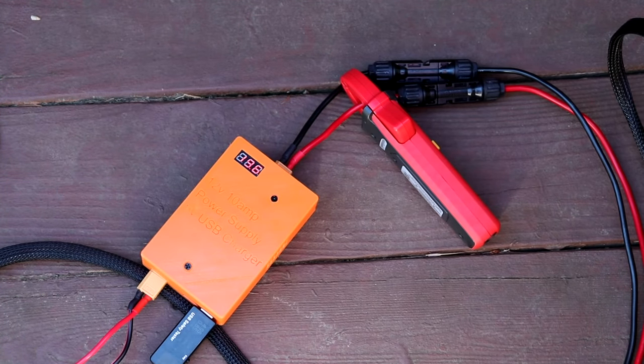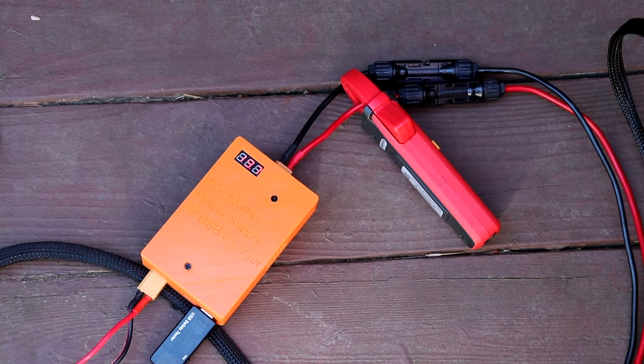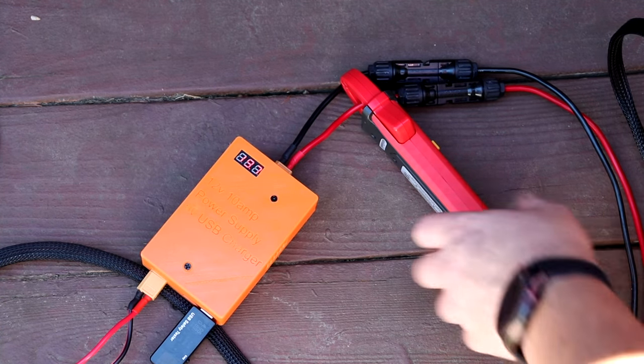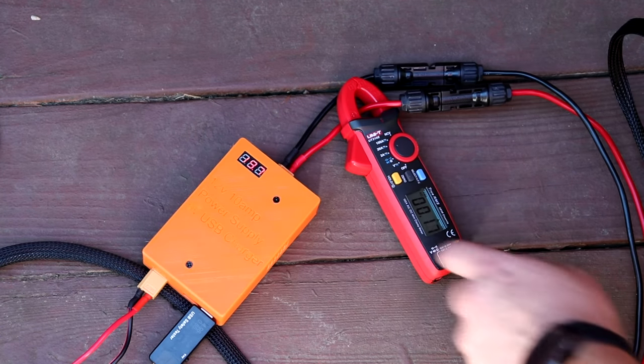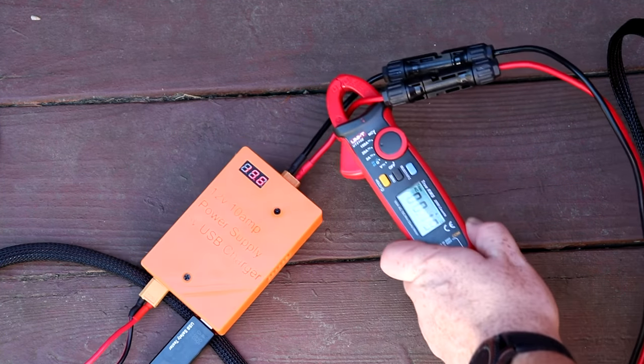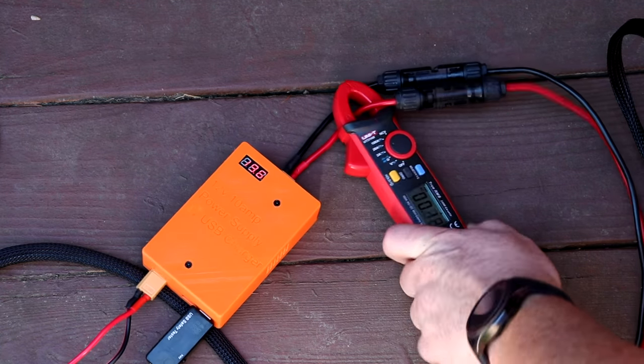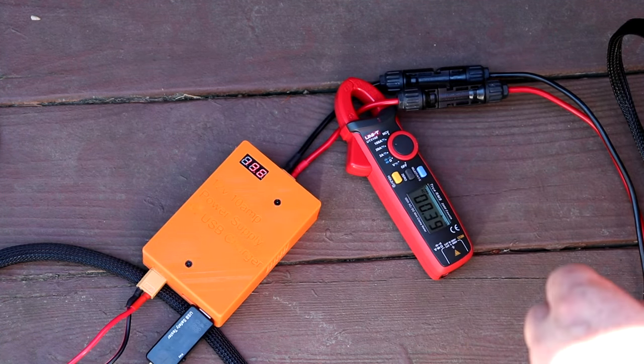So here I have 19.7 volts which is a lot from the solar panel going in. I've actually never seen 19 volts go in. It's usually like 15.6, 15.7 but that's nice.